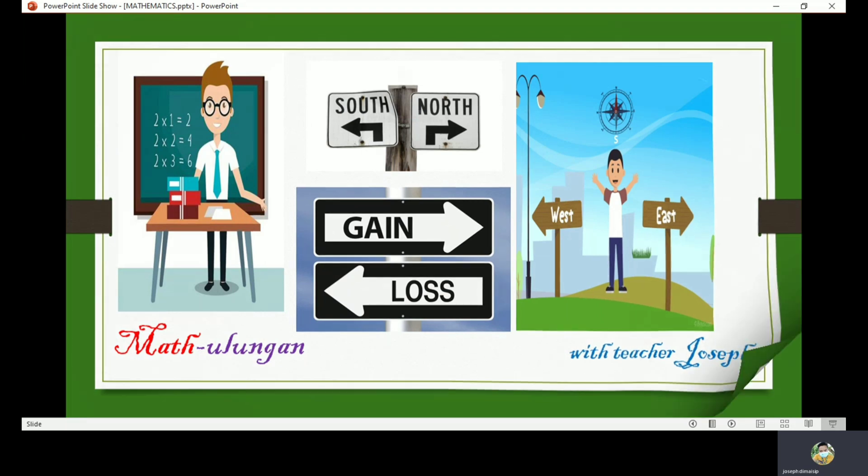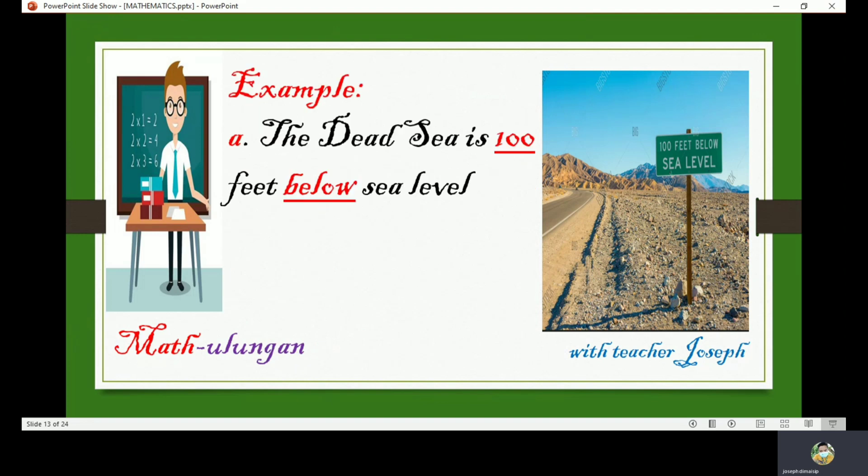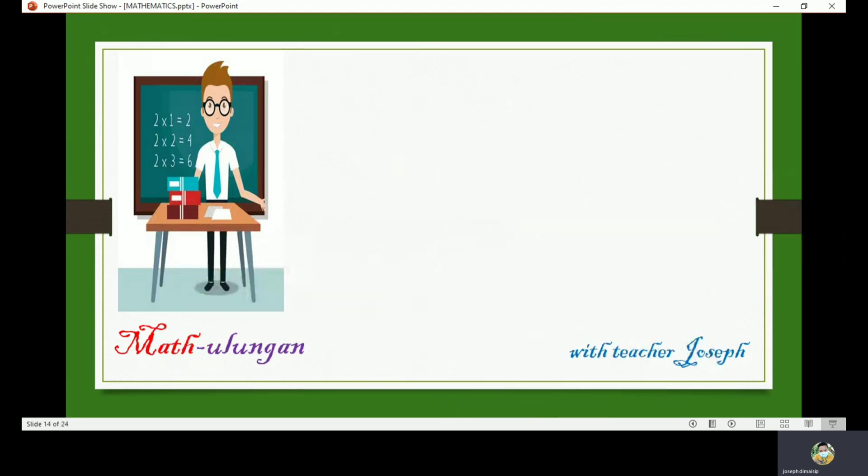Let us take a look at this example: 100 feet below sea level. The Dead Sea is 100 feet below sea level. We can represent 'below' as a negative number, and the additive inverse of below is above. Now we can write it in symbol: negative 100. Now let us know the opposite of this example.